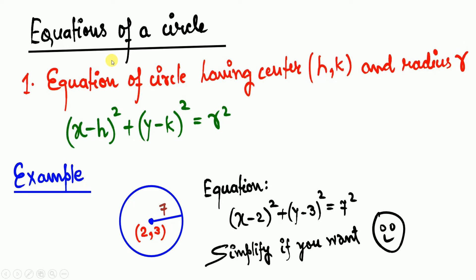There are different formats for writing the equation of a circle. The first format is the equation of a circle having center (h, k) and radius r. The equation is: (x − h)² + (y − k)² = r². For example, if the center is (2, 3) and radius is 7, substitute to get (x − 2)² + (y − 3)² = 7². You can simplify further or leave it in this form.